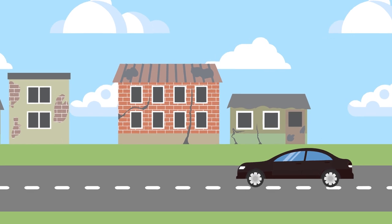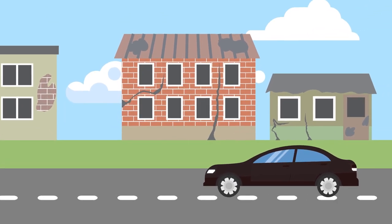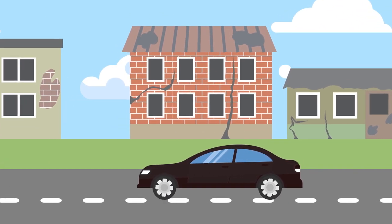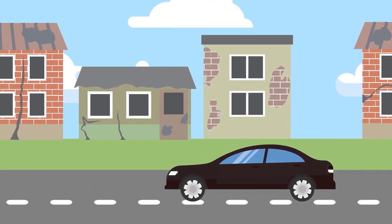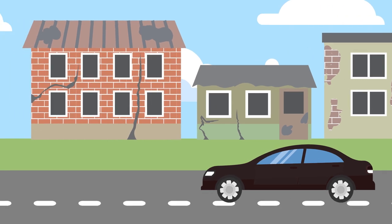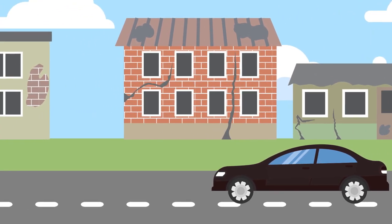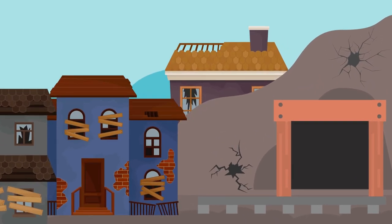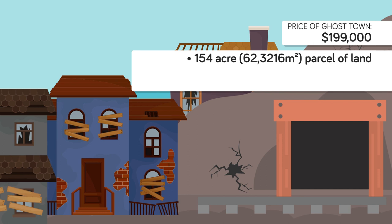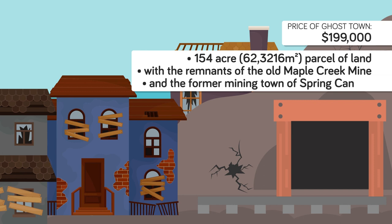Speaking of real estate, our writer checks out some unusual property in the United States. Instead of buying a mansion, why not buy an entire town? The only catch is that the town is abandoned. There are several ghost towns for sale in the United States. One ghost town the writer can afford to buy is located in Helper, Utah. There's a description of it on Realtor.com. For $199,000 he gets a 154-acre parcel of land that contains the remnants of the old Maple Creek Mine and former mining town of Spring Canyon.